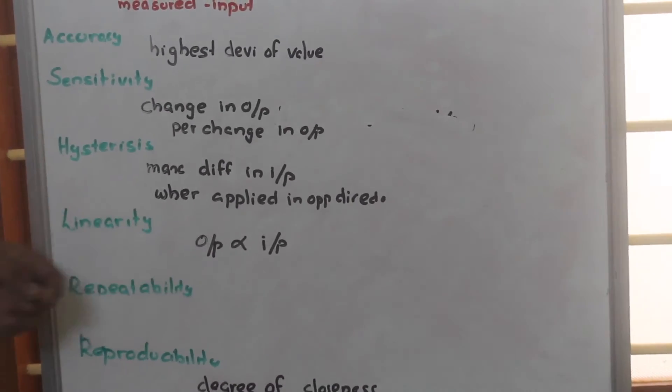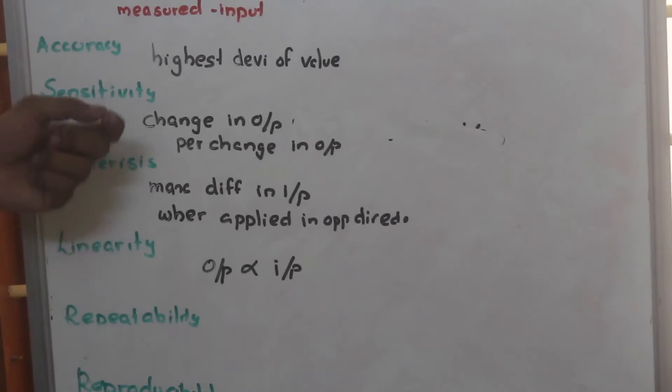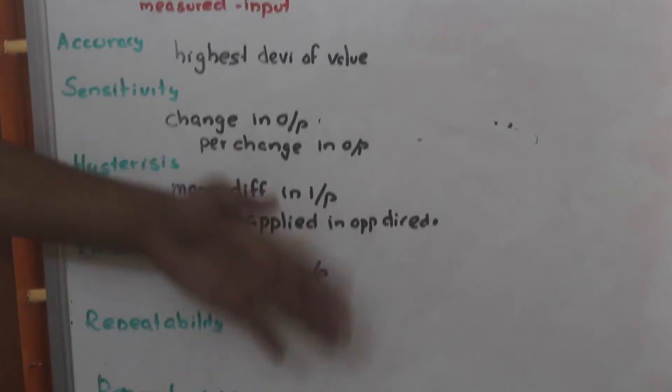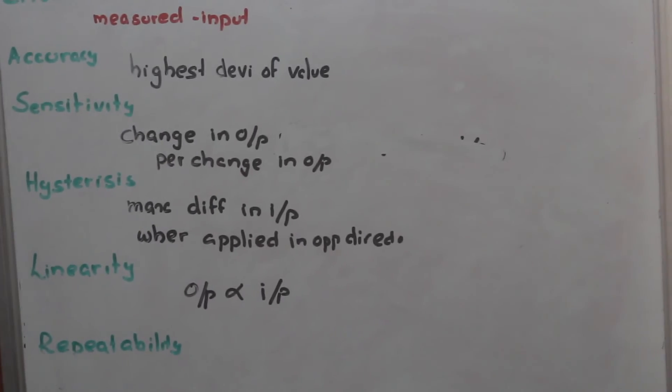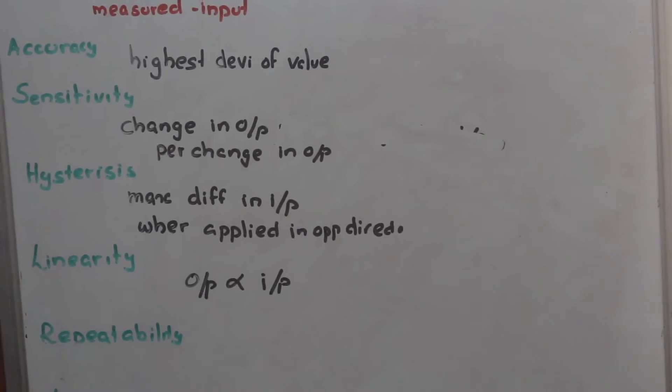Now linearity. Linearity means if the output is proportional to input, we can say that it is linear.